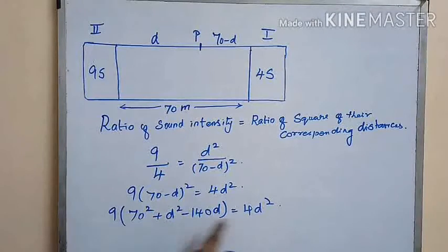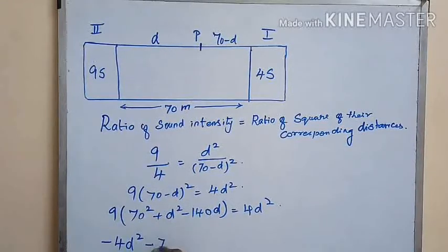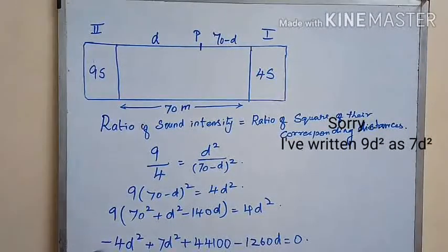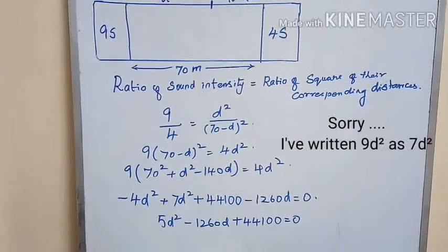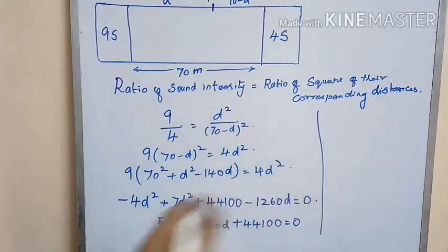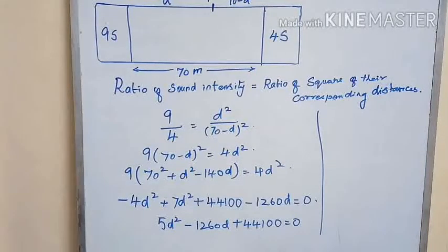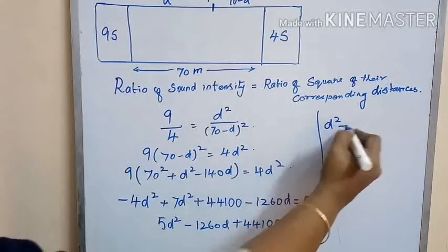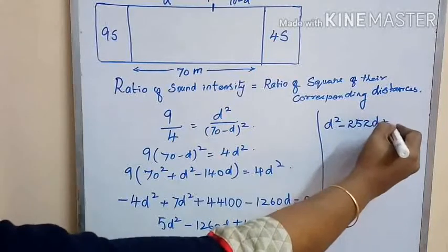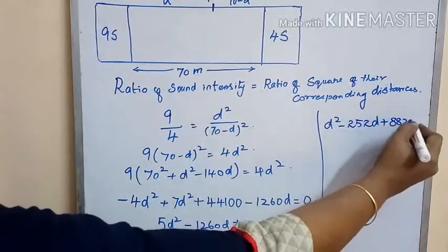Expanding and bringing 4d squared to the left-hand side, we get minus 4d squared plus 9d squared minus 1260d plus 44100 is equal to 0. We have a common factor of 5, so dividing throughout we get the quadratic equation: d squared minus 252d plus 8820 is equal to 0.